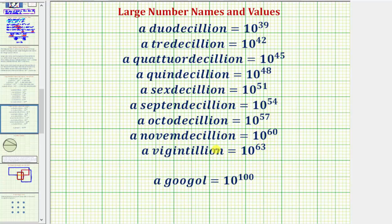And I'm going to go ahead and stop here, but I do want to show a Google, which is equal to 10 raised to the power of 100. And once again, to write these numbers out, we would have a one followed by the number of zeros indicated by the exponents. I hope you found this helpful.